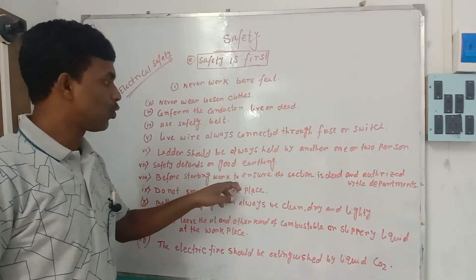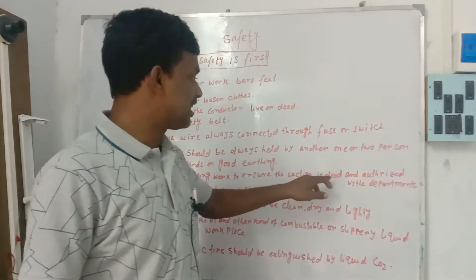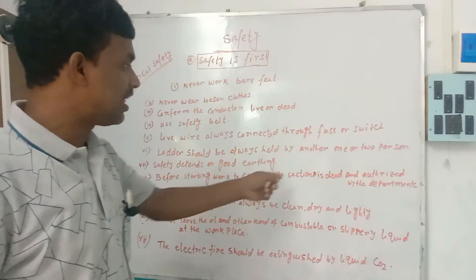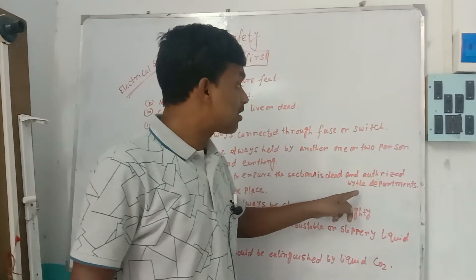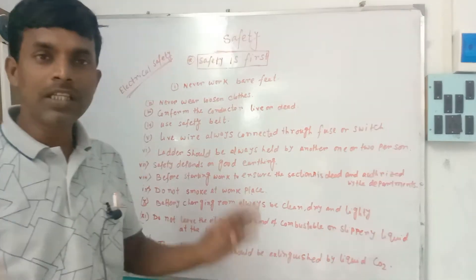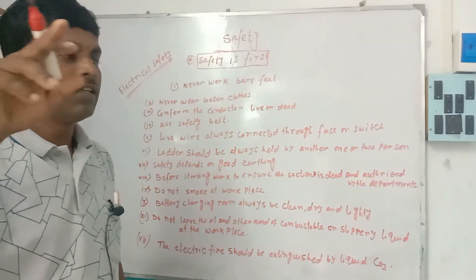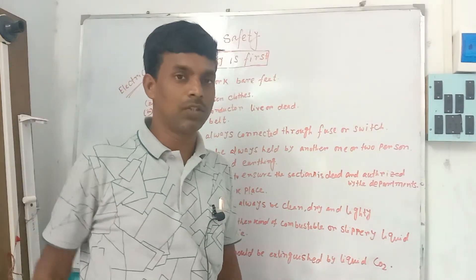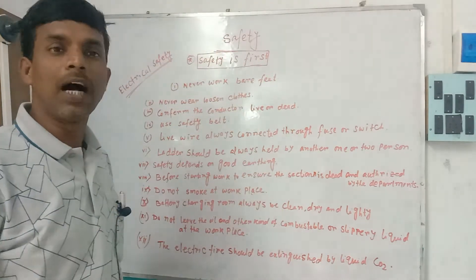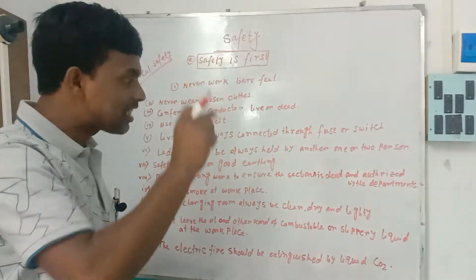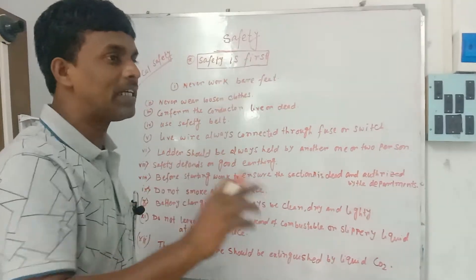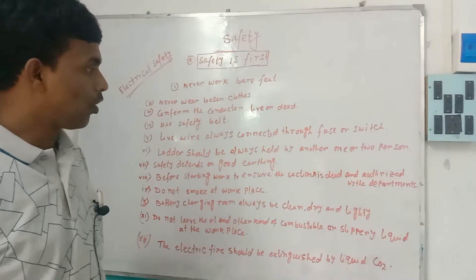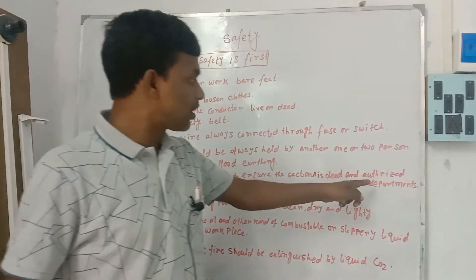Before starting work, ensure that the section is dead. The section area is dead and authorized by the departments. We are working in the industry, in this department, in the facility plant, in MSME. We are working in this section of the department — the section is dead. We did not supply the section. Next, the authorization is done.